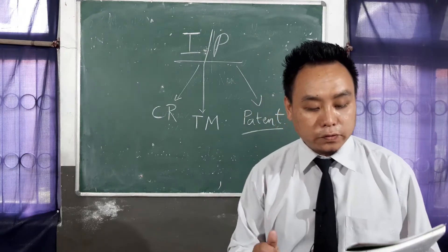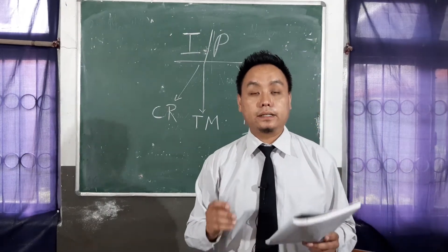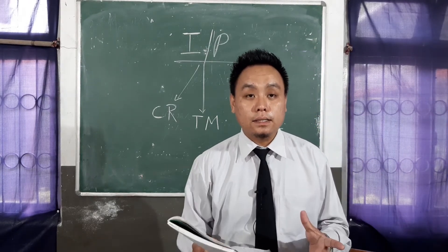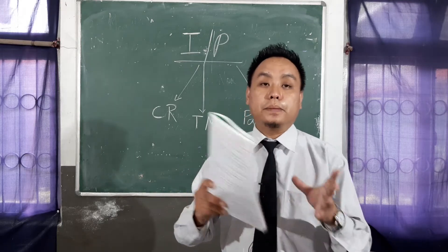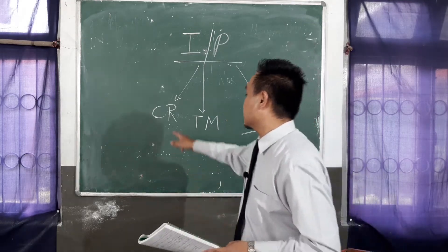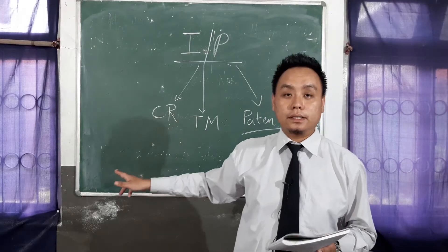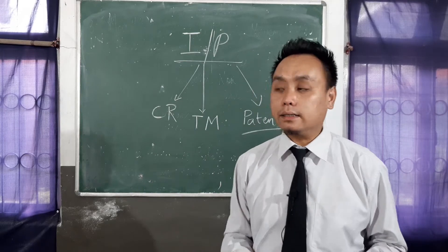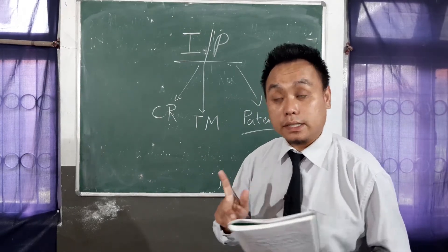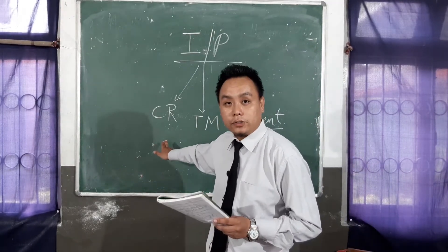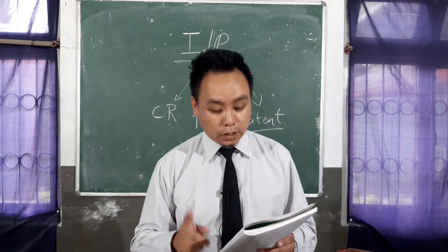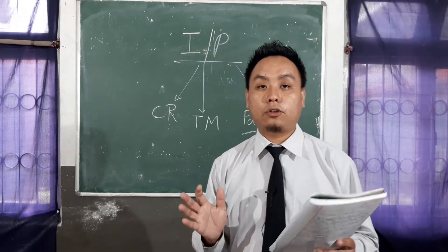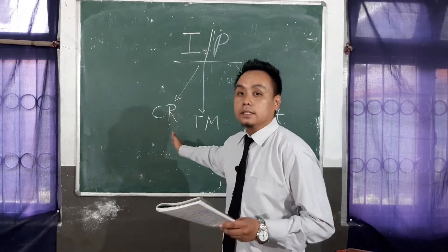Books, movies, and art cannot be patented. We should always remember that books, movies, and arts come under copyright, which we have already covered. So if I write a book or make a movie, I can't claim patent for it, but I can always go for copyright. One can protect these assets under the law of copyright.